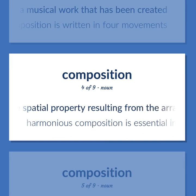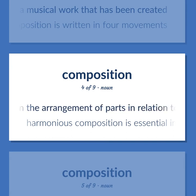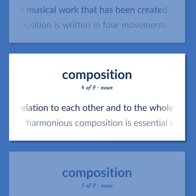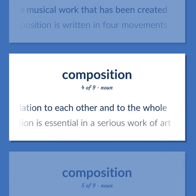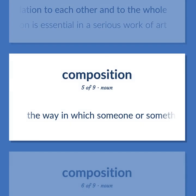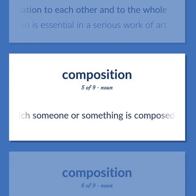Composition (noun): The spatial property resulting from the arrangement of parts in relation to each other and to the whole. Example: Harmonious composition is essential in a serious work of art. Also: the way in which someone or something is composed.